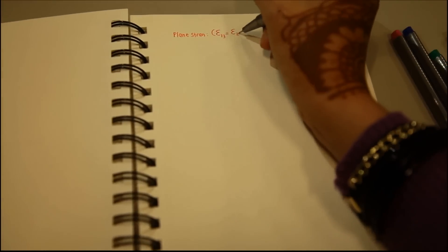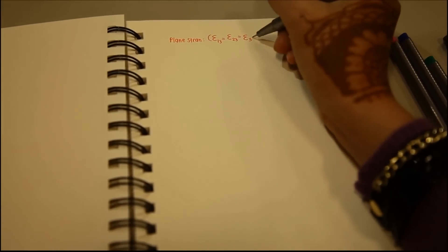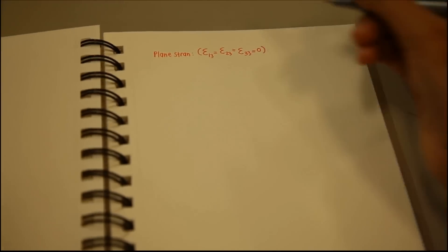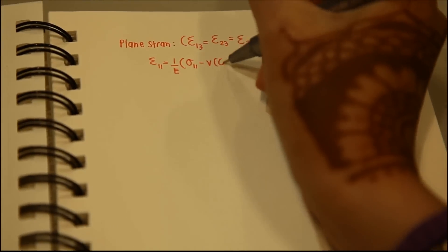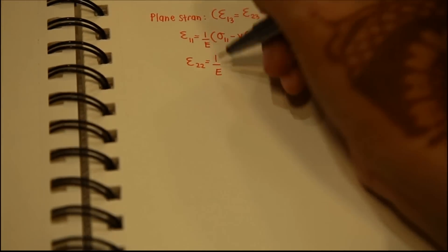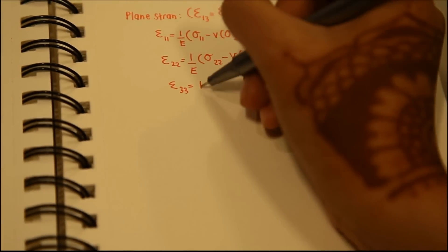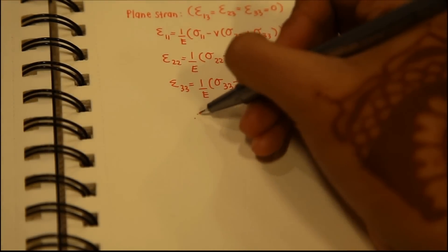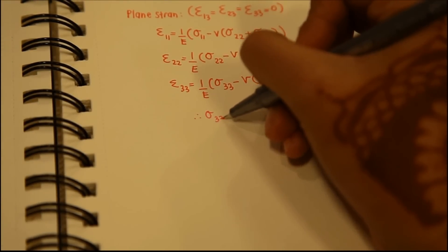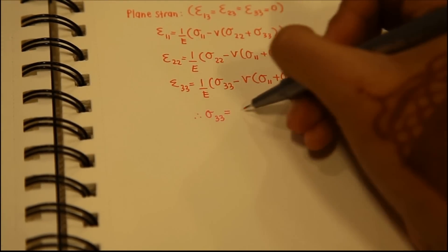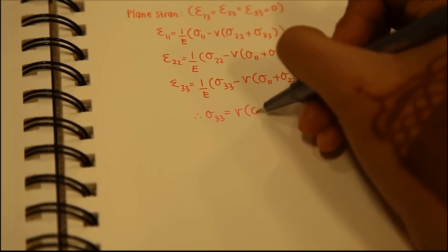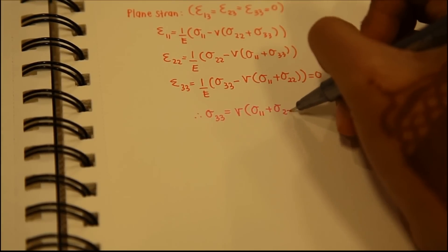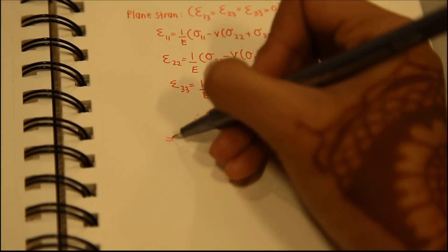Using the principle of superposition and from lecture notes, we can derive the different equations for epsilon 1,1, epsilon 2,2, and epsilon 3,3. Given plane strain conditions, we have epsilon 1,3, epsilon 2,3, and epsilon 3,3 equal to zero. This gives us sigma 3,3 equal to mu times (sigma 1,1 plus sigma 2,2).